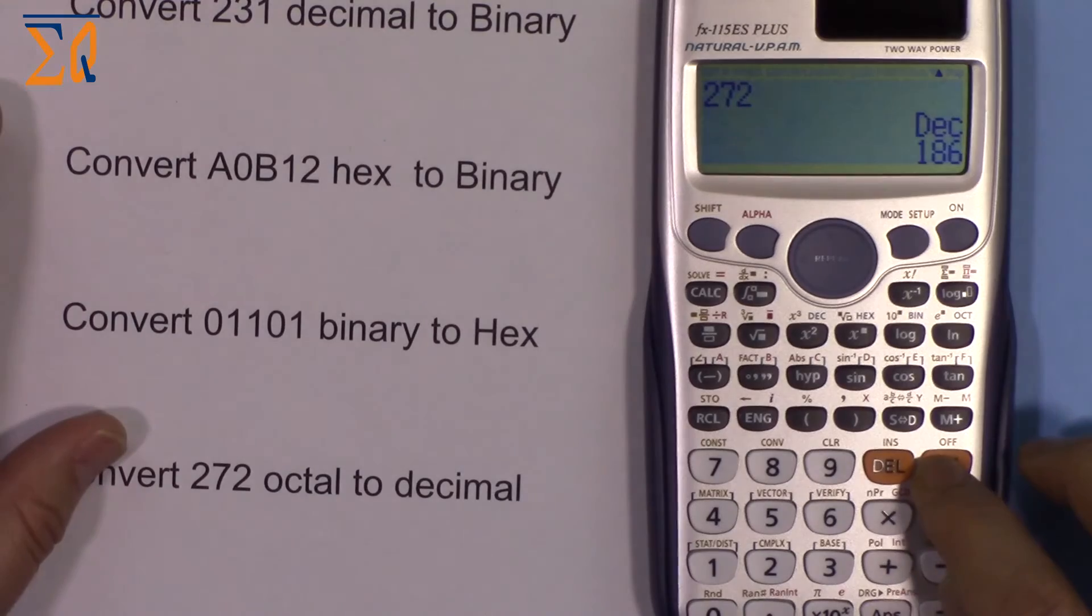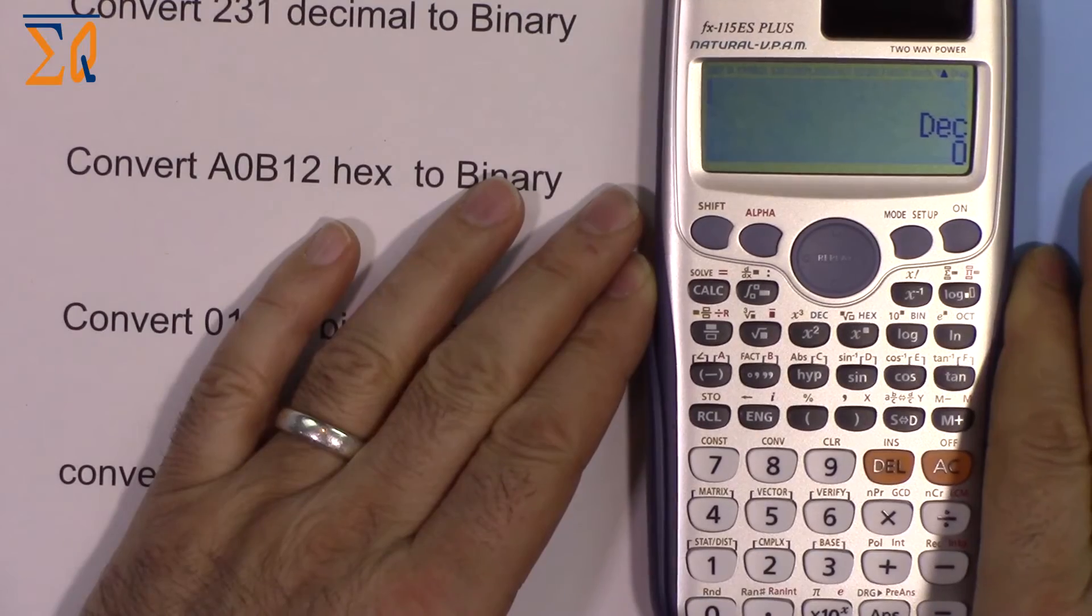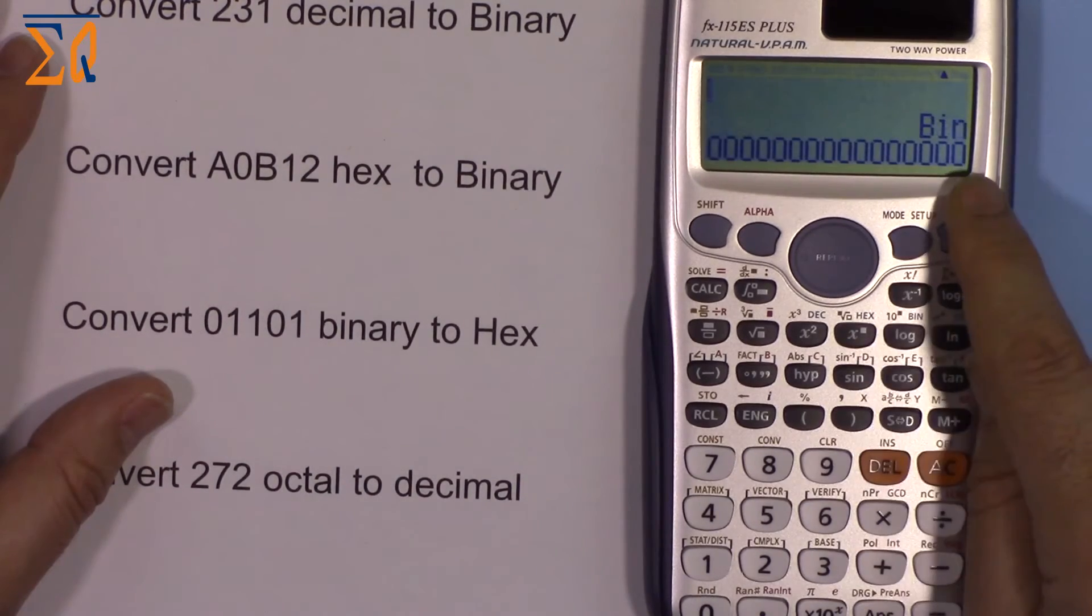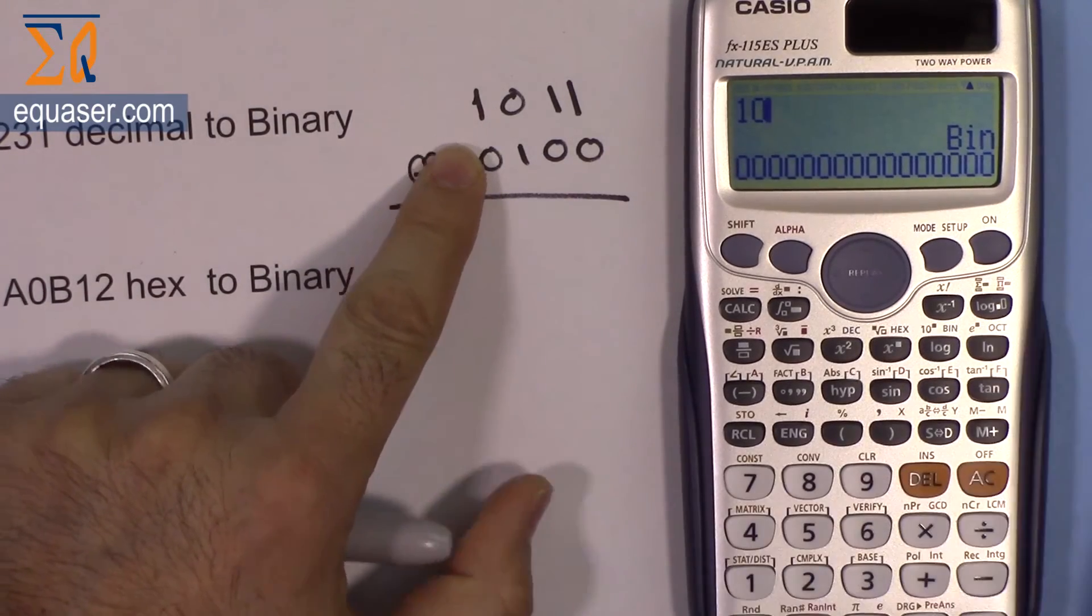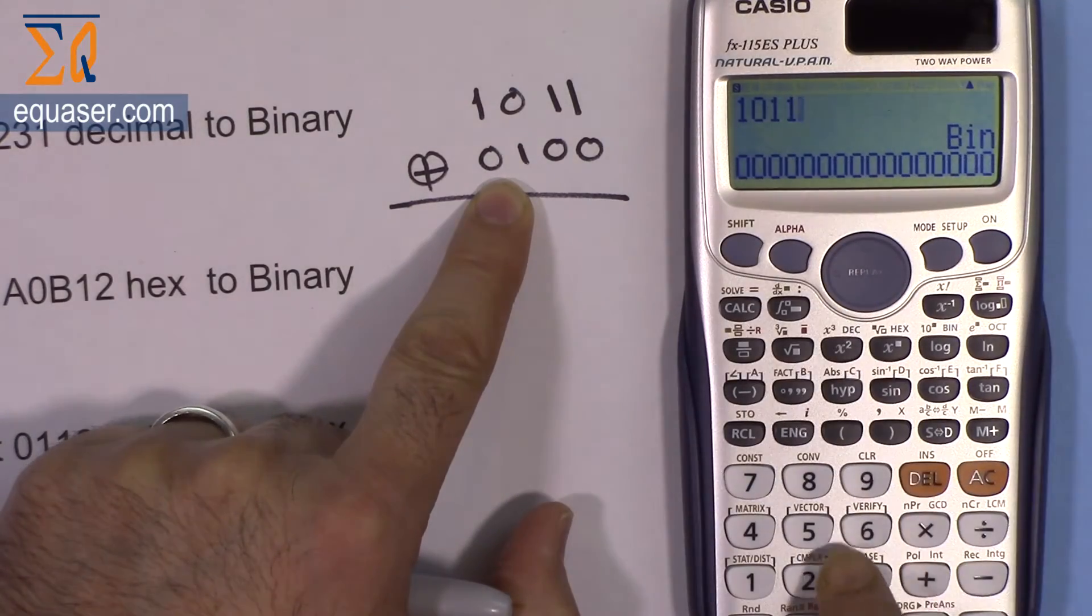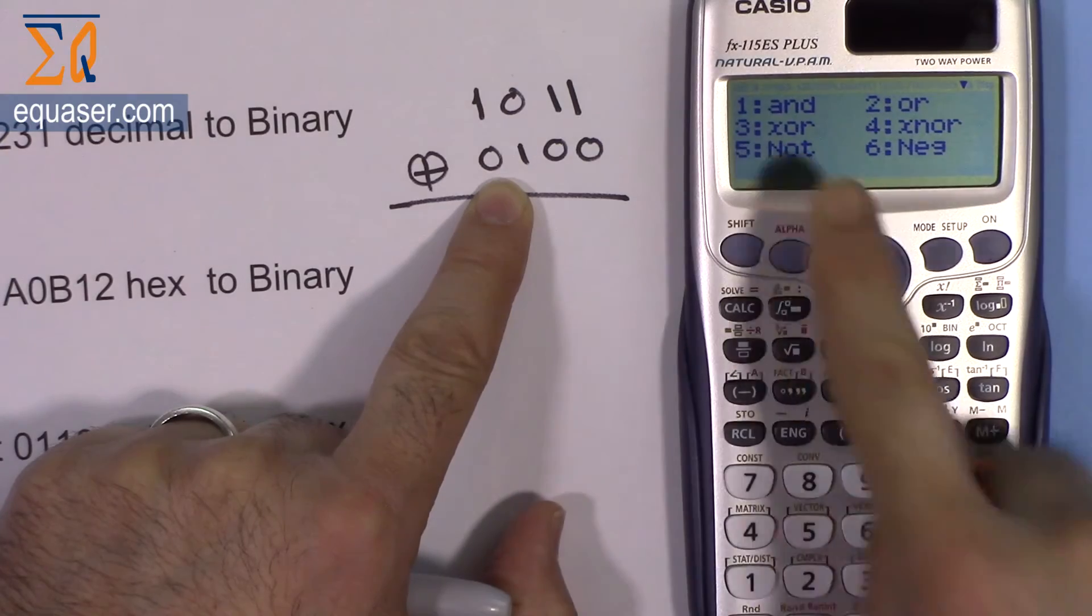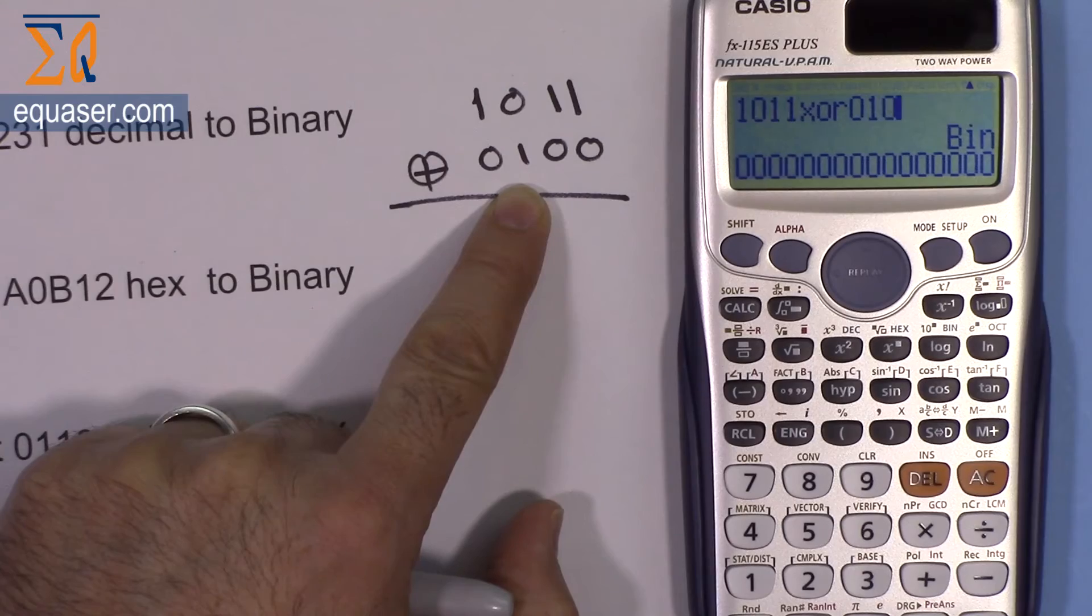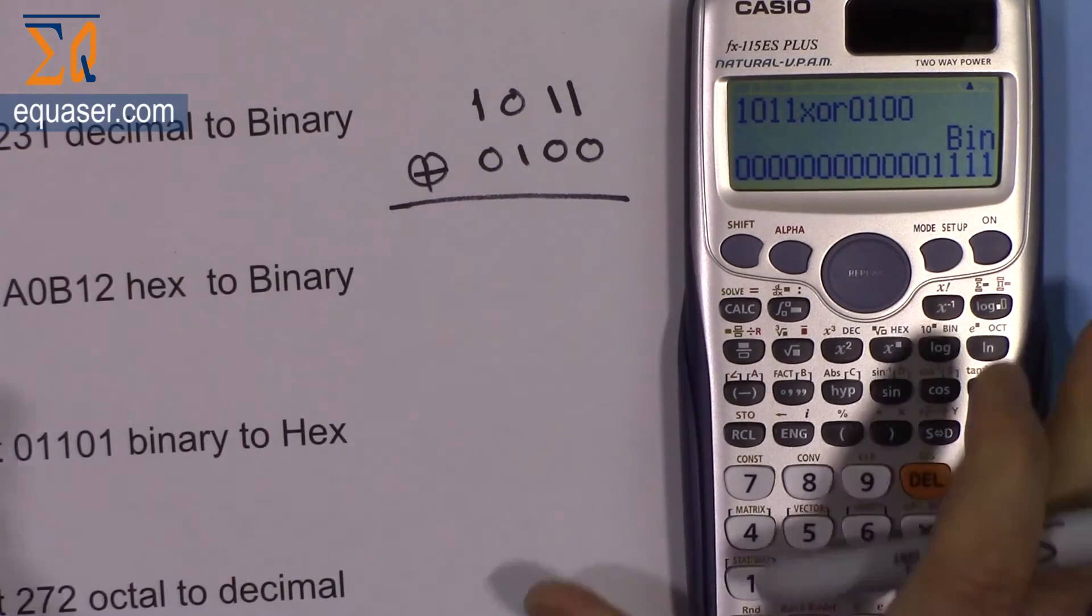Let's go to binary mode. I'm entering 1011. For XOR operation, press shift, base, XOR which is number 3, then enter 0100, and equal sign.